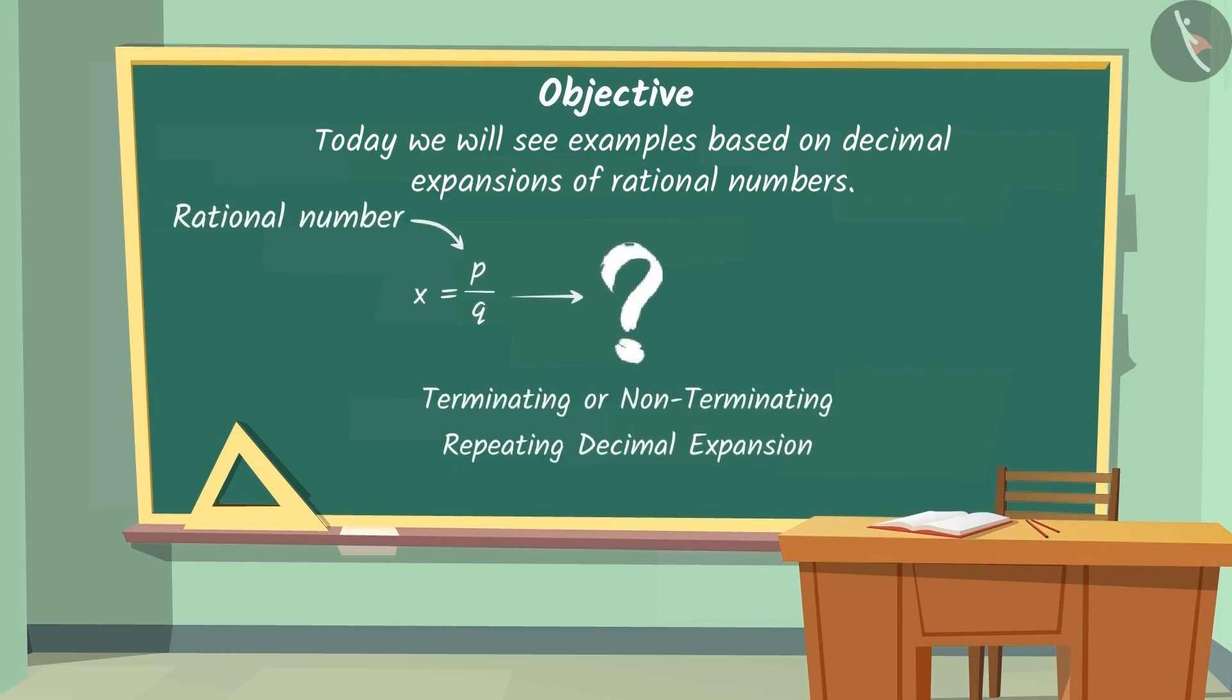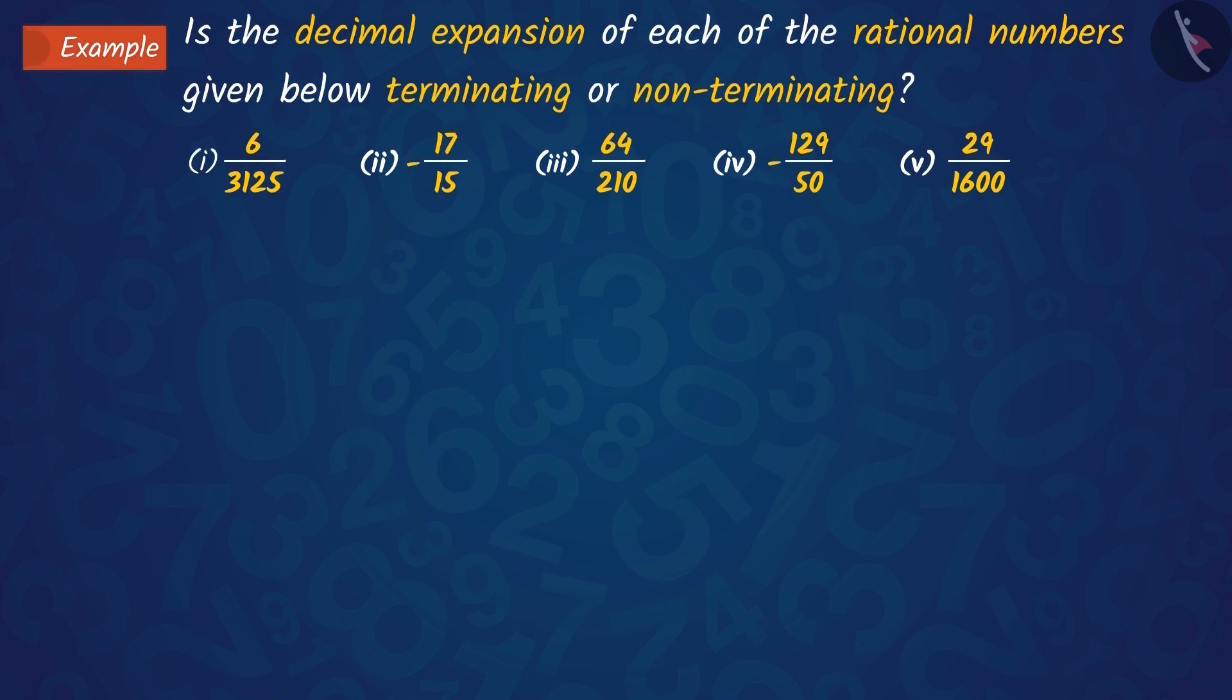Now, we will see an example based on it. Here, without using division, we have to tell which rational numbers have a terminating decimal expansion and which ones have non-terminating decimal expansion.